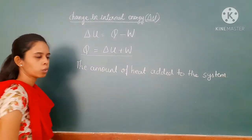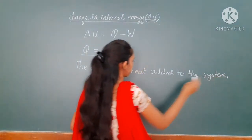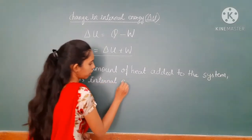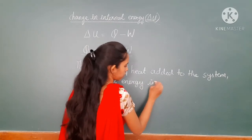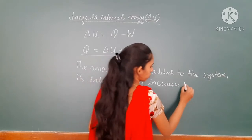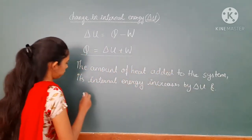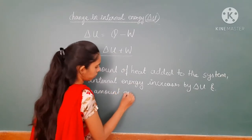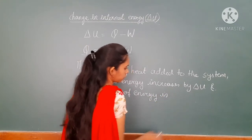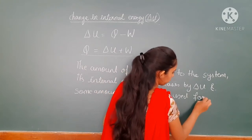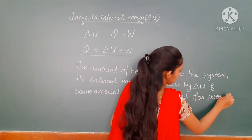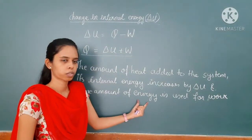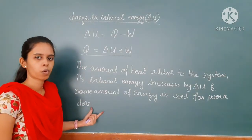The amount of heat added to the system increases its internal energy by delta U, and some amount of energy is used for work done — or you can say some amount of internal energy is being used for doing work by the system on the environment.